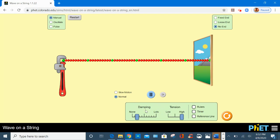On this tab, you have two features of waves: damping and tension. Also, we have a selection of measuring tools. So let's start with the measuring tools.